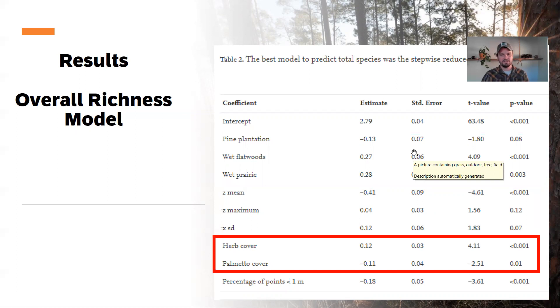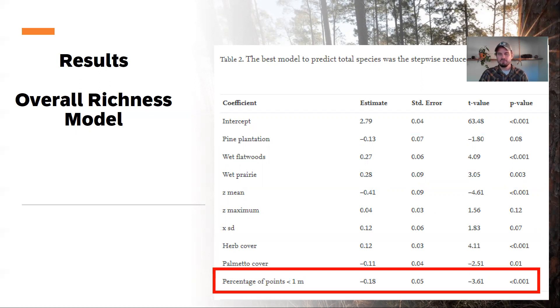Also, we see that some traditional metrics, herb cover and palmetto, a shrub type here in Florida, and the percentage of points less than one is also important. So a strata metric. Here we have natural community classification type, standard ocular estimates, and then also LiDAR and strata metrics being important in the overall model.